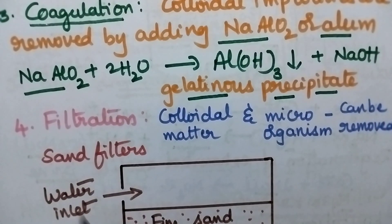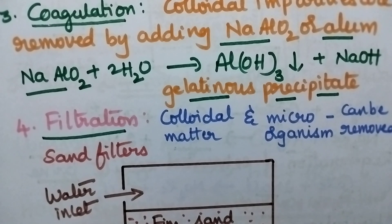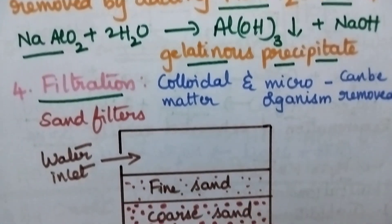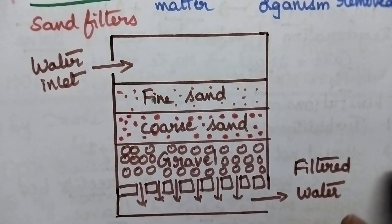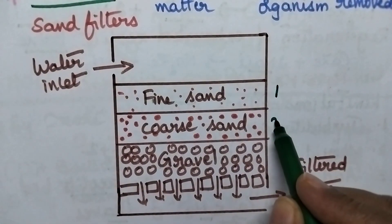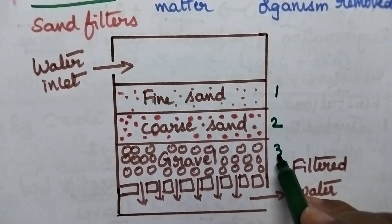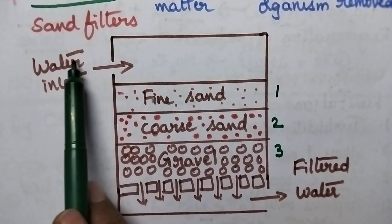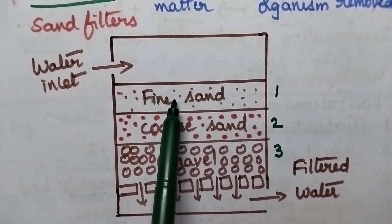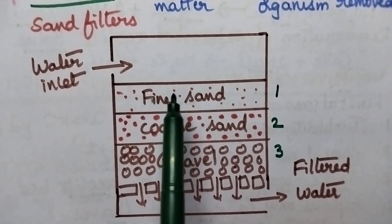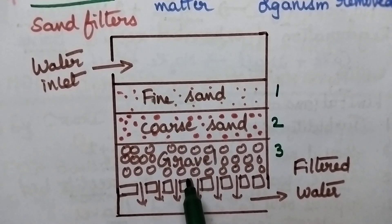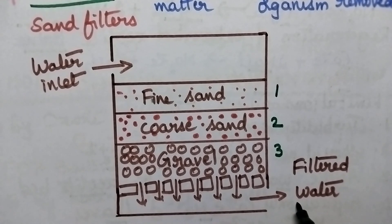The fourth step involves filtration. In this method, colloidal matter and microorganisms can be removed from the water whenever the water is passed through sand filters. The sand filters consist of three layers: one is the fine sand layer, second is the coarse sand layer, and third is the gravel layer. Whenever water is slowly passed through the fine sand layer, almost all colloidal impurities and microorganisms are retained in the first layer, and then the water percolates through the coarse sand and gravel, and finally the filtered water is obtained.